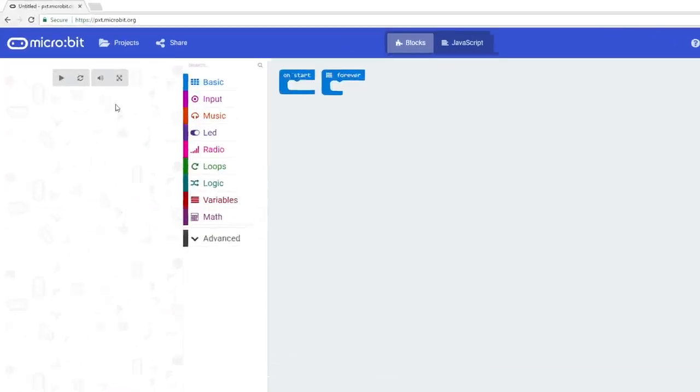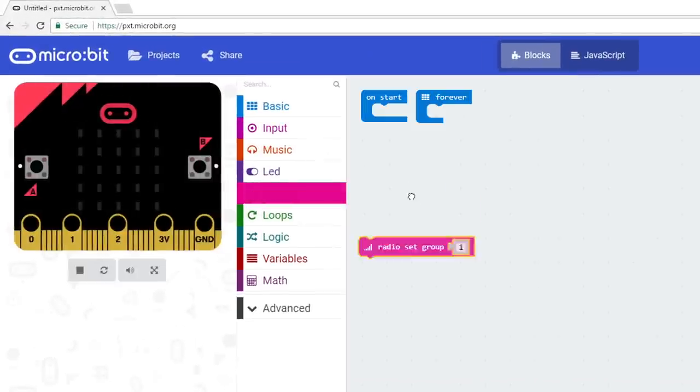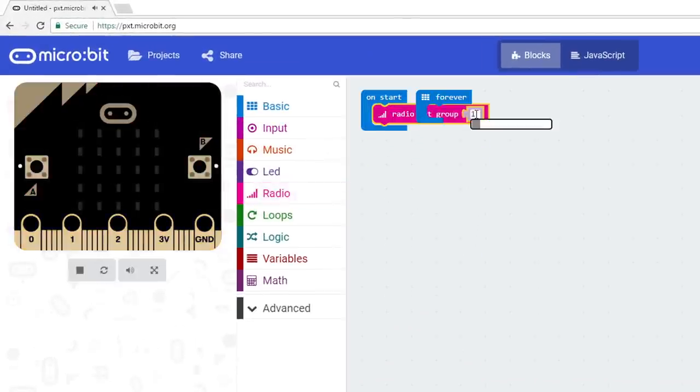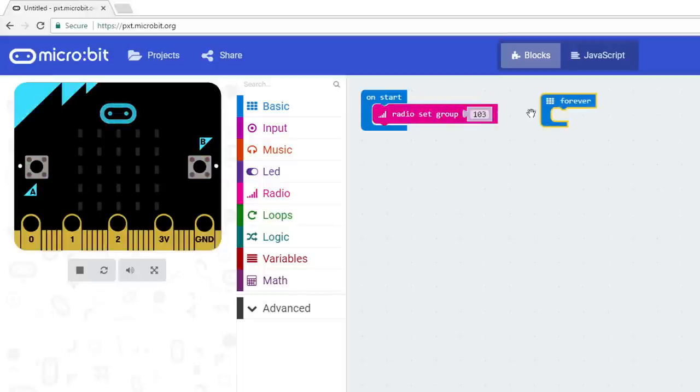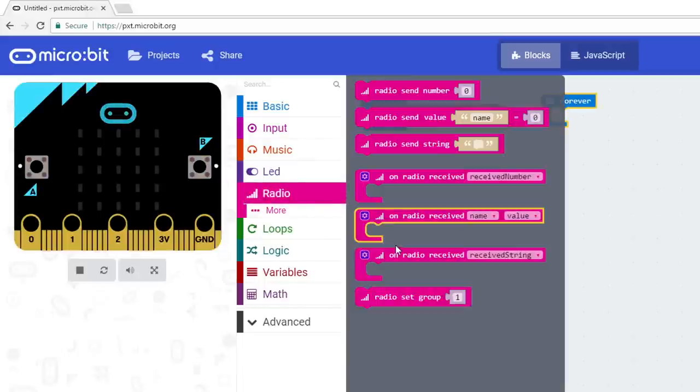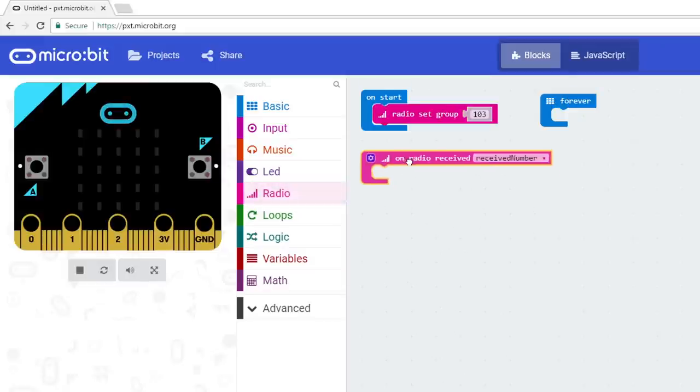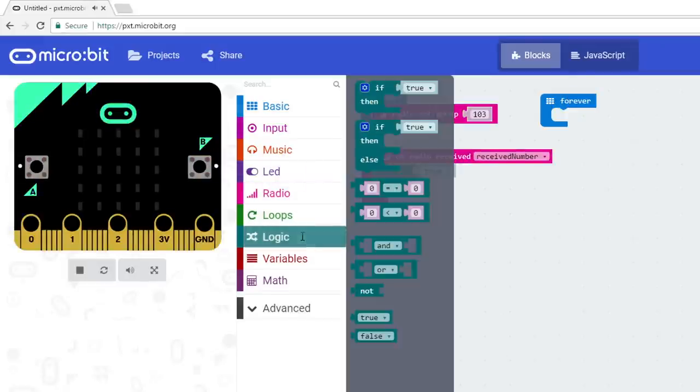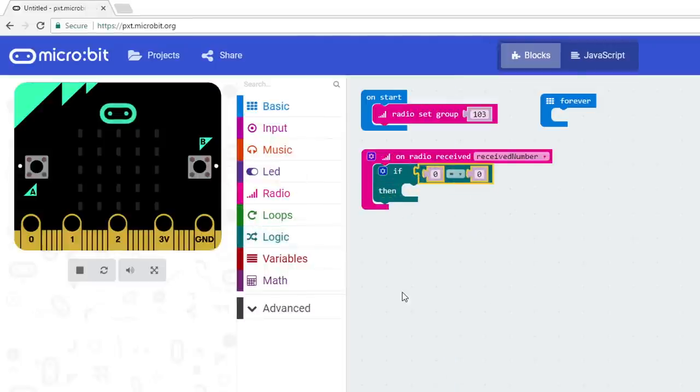Start a new project. Drag a Radio Set Group block to On Start, and change the group number to the same as your transmitter, which was 103 for me. Drag an On Radio Received block from Radio to your project area. Drag an If Then block from Logic to the On Radio Received block. Grab an Equality block from Logic and snap it to If. In Variables, drag Received Number to the first 0 in the Equality block. Change the second 0 to 1. This says to only execute code in the Then section if we receive the number 1 over the radio.